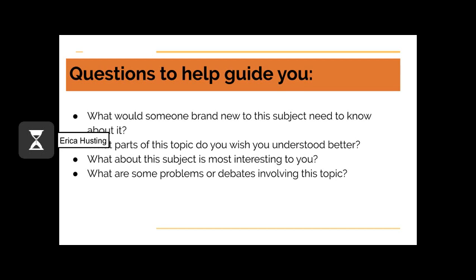As you begin to think through the various concepts to include in your map that we mentioned in the previous slide, these following questions can help further guide you in your brainstorm. What would someone brand new to this subject need to know about it? What parts of this topic do you wish you understood better? What about this subject is most interesting to you? What are some problems or debates involving this topic? A great question to keep in mind as you build this map is, are there ideas that naturally relate to each other? Are there common threads that you can weave together? Try to indicate where you think ideas belong and connect them in a way that makes sense to you.